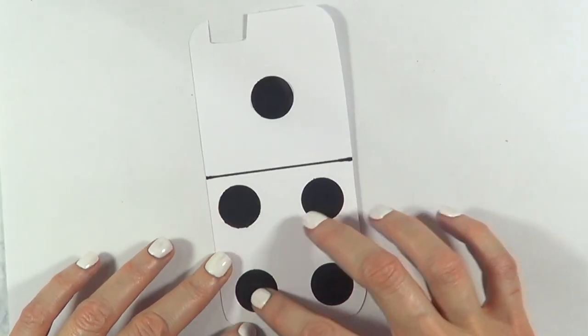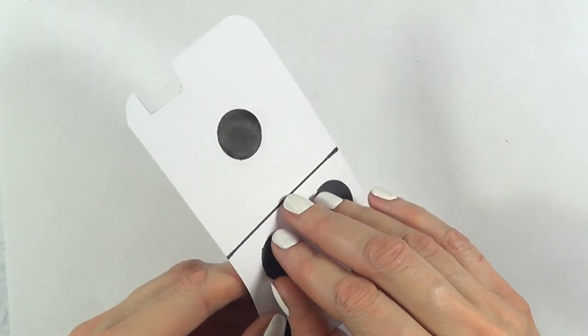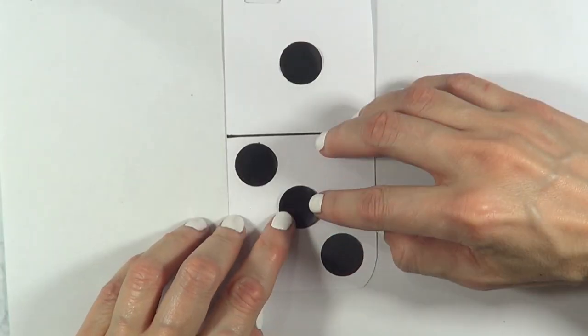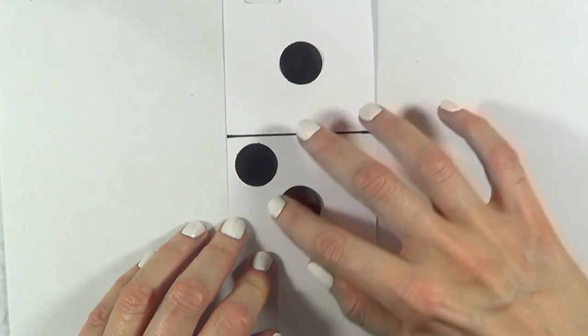So as you can see with a clear one you have many more options because you can change the black to the white, add more stickers, add less stickers. You can customize it daily pretty much. These are the ideas that I want to share with you.